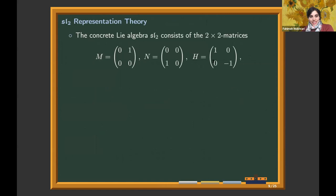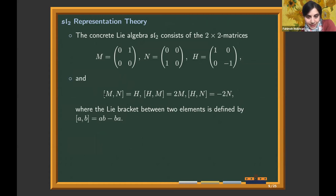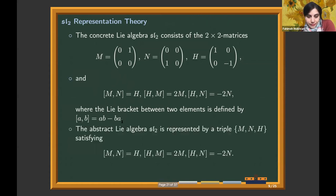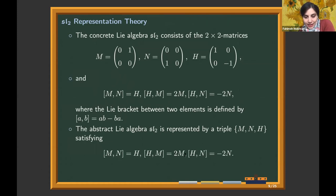The Lie algebra of SL2 is generated by three matrices: M, N, and H, with the following Lie brackets. M is a nilpotent matrix, N is nilpotent, and H is semi-simple. The Lie bracket is defined by AB minus BA. The SL2 representation is given by the triple (M, N, H) satisfying these Lie bracket conditions.